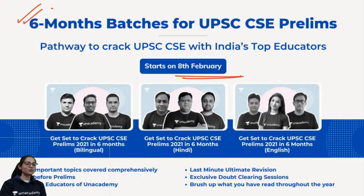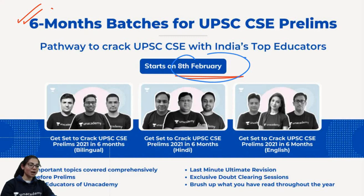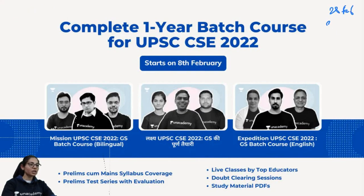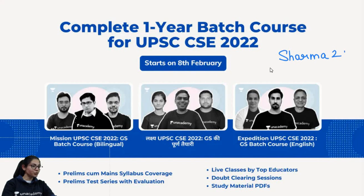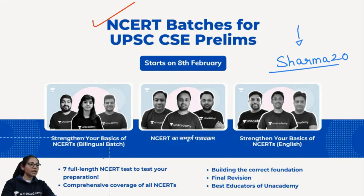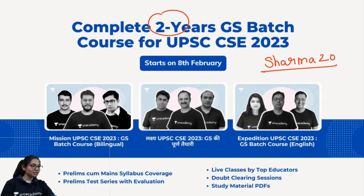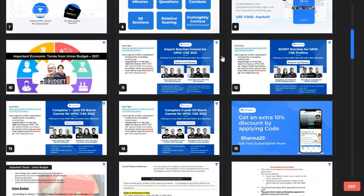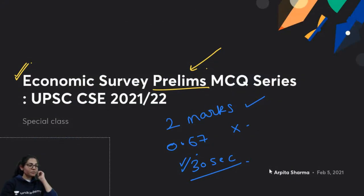That was all for today. I hope you enjoyed the class. New batches are starting on Unacademy Plus from 8th of February. Until 28th February, you will get a 10% discount using code SHARMA20. After that the discount will reduce to 5%. We also have NCRT batches available. Use the code SHARMA20 to get 10% discount. The link is given in the description. Thank you and have a wonderful day ahead. See you at the next one.